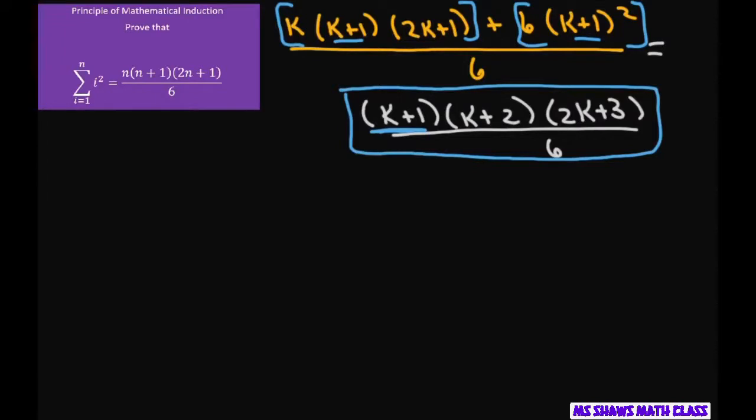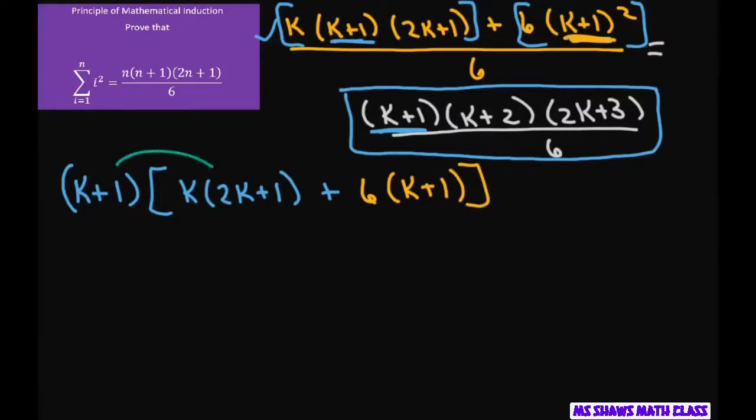And if I separate these two out like this, both of these have a k plus 1. So what I'm going to do is factor out a k plus 1 with the greatest common factor. So if you factor out a k plus 1, we get k plus 1 times, and so I factored that out and we're left with k times 2k plus 1 plus, and I factored out a k plus 1 here. So now I just have 6 times k plus 1 left. And you think about it, if you distribute this back, you would get back to the original. So we just factored that out.